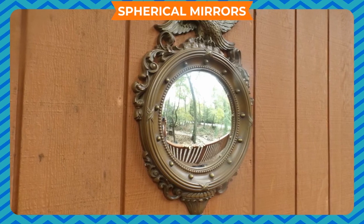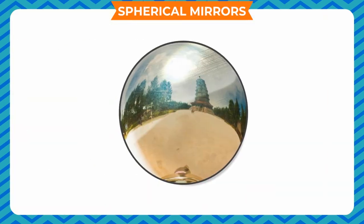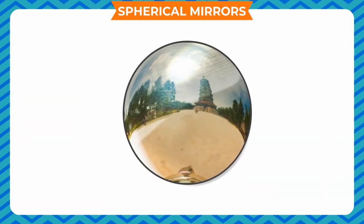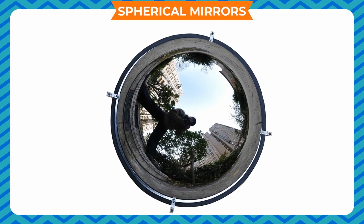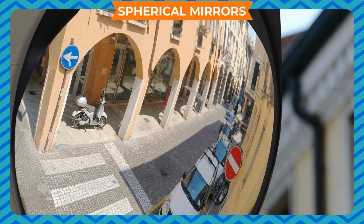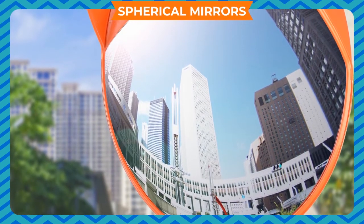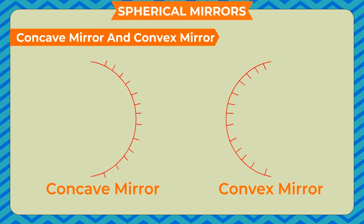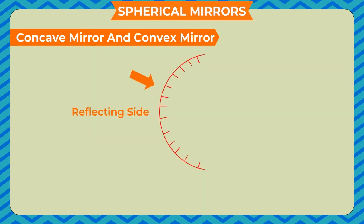Spherical mirrors: Any reflecting surface which is part of a sphere is called a spherical mirror. The nature of images formed by spherical mirrors is different from that formed by plane mirrors. The reflecting surface can be either the outside or inside of the curved surface depending on the silvered side. Spherical mirrors are of two types: concave mirror and convex mirror. If the reflecting surface is on the inside, it is a concave mirror; if on the outside, it is a convex mirror.